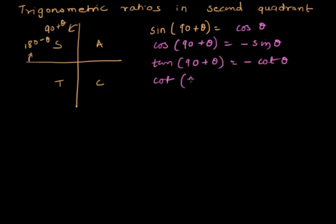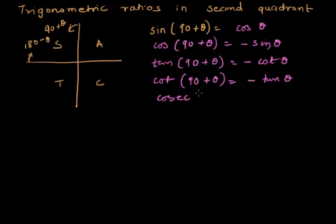Then cot of 90 plus theta — this cot becomes tan, and being in the second quadrant, only sine and cosec are positive, so this is negative. Then cosec of 90 plus theta — sine and cosec are the only positive trigonometric ratios, so cosec becomes positive, and because of this 90, cosec becomes sec theta.